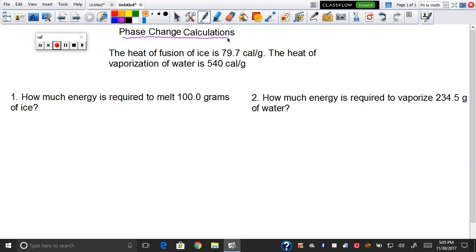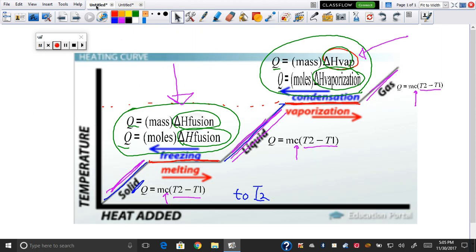The heat of fusion of ice is 79.7 calories per gram. If we go to our other page, remember the heat of fusion of ice is this thing, so we're going to use this equation on this page.